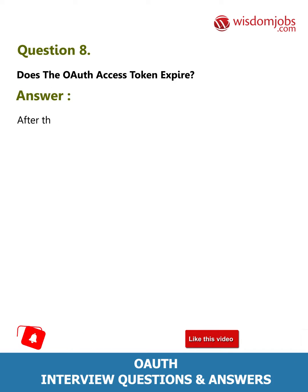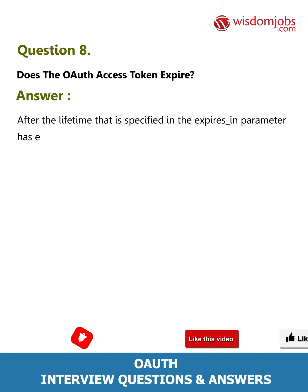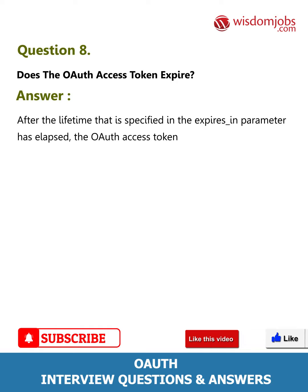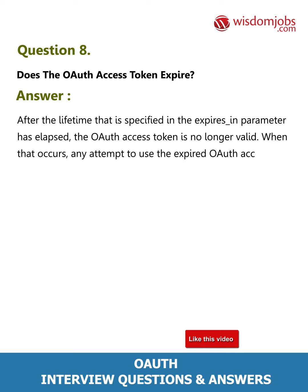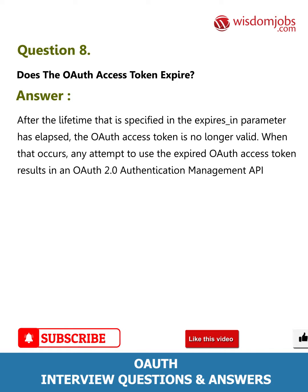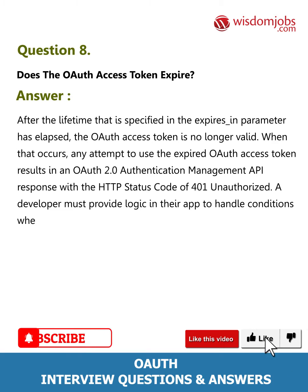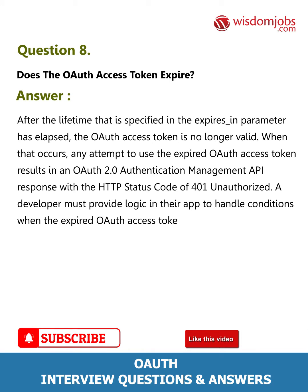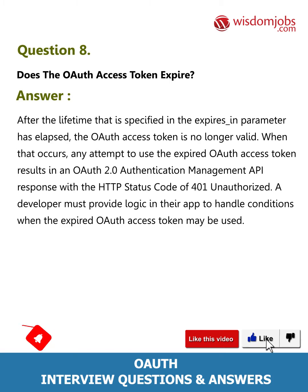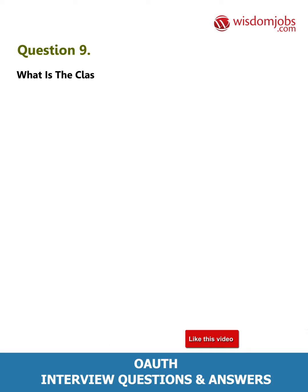Question 8: Does the OAuth access token expire? Answer: After the lifetime specified in the expires_in parameter has elapsed, the OAuth access token is no longer valid. When that occurs, any attempt to use the expired OAuth access token results in an OAuth 2.0 authentication management API response with the HTTP status code 401 Unauthorized. A developer must provide logic in their app to handle conditions when an expired OAuth access token may be used.